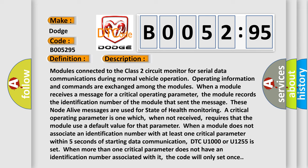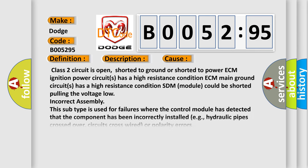This diagnostic error occurs most often in these cases: Class 2 circuit is open, shorted to ground or shorted to power. ECM ignition power circuits has a high resistance condition. ECM main ground circuits has a high resistance condition. SDM module could be shorted pulling the voltage low. Incorrect assembly. This subtype is used for failures where the control module has detected that the component has been incorrectly installed, e.g., hydraulic pipes crossed over, circuits cross-wired or polarity errors.